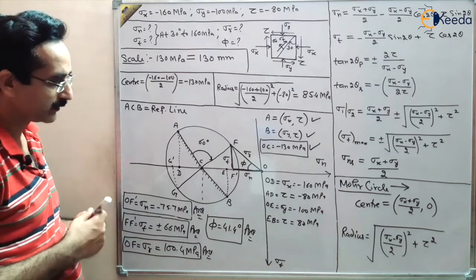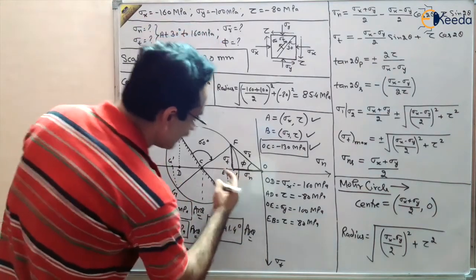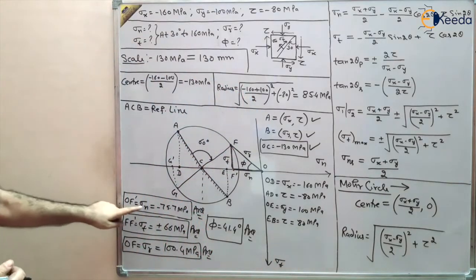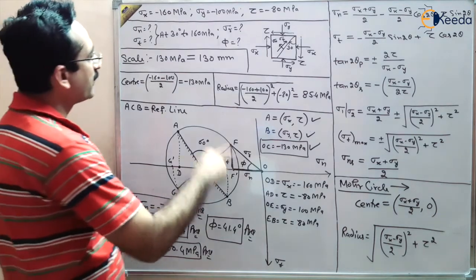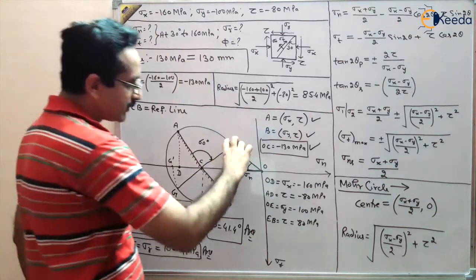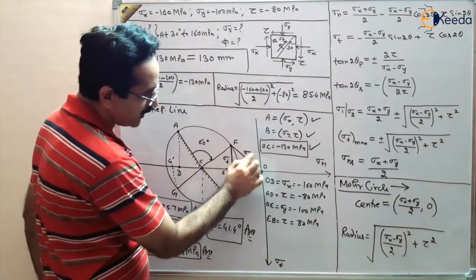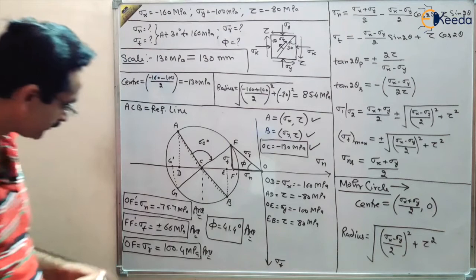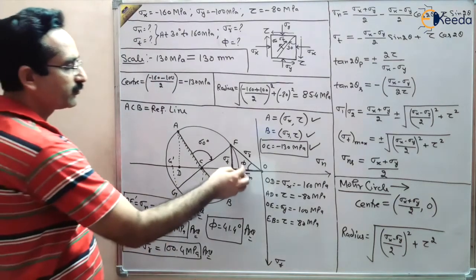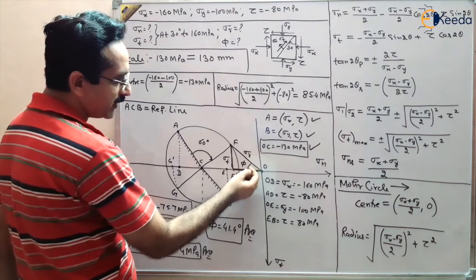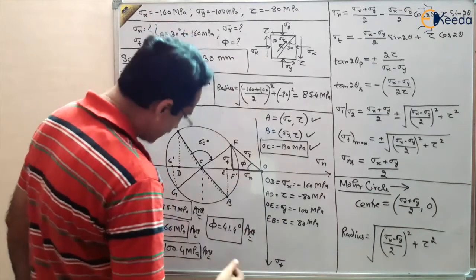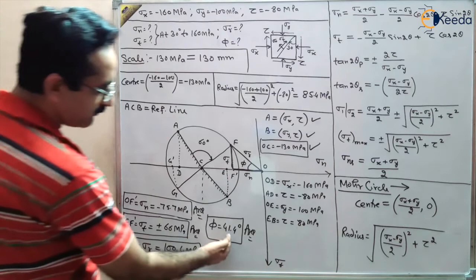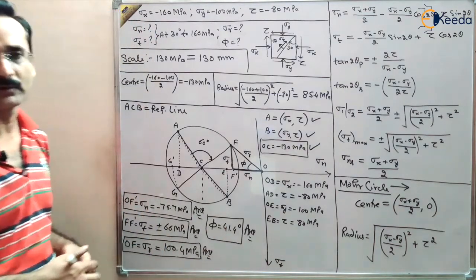Dropping a perpendicular from F to the x-axis gives F-dash: OF-dash = sigma_n = -75.7 MPa, and F-dash = sigma_t = ±66 MPa. The resultant is obtained by measuring OF, giving sigma_R = 100.4 MPa. The angle phi between the normal and the resultant, measured with a protractor, is 41.4 degrees. All answers are obtained using the Mohr circle graphical method.